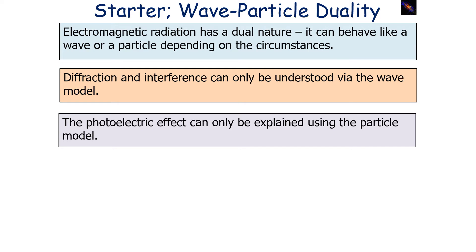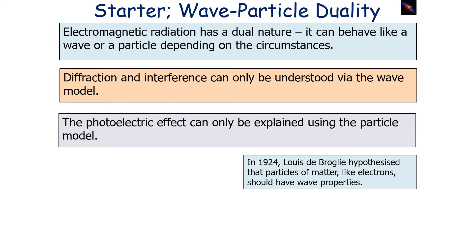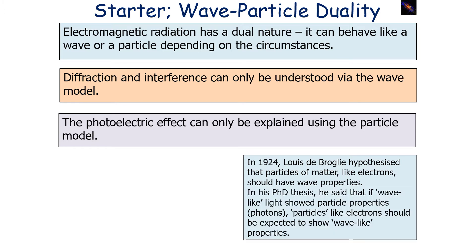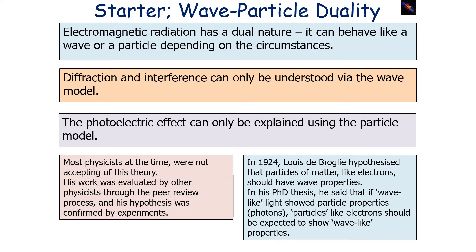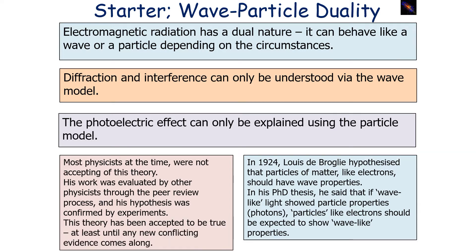In 1924, Louis de Broglie hypothesized that particles of matter, like electrons, should have wave properties. In his PhD thesis, he stated that if wave-like light showed particle properties — i.e. they act like photons — then particles like electrons should be expected to show wave-like properties. At the time, most physicists were not very accepting of this theory, but his work was evaluated through peer review and his hypothesis was confirmed by experiments.